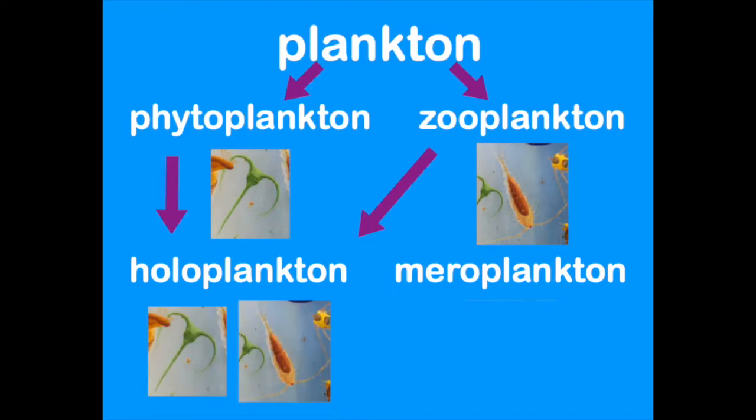Our final group of plankton is called meroplankton. They are plankton for only a part of their life cycle. They start out as drifters, but eventually they grow strong enough that they can swim against the ocean's currents. So they're plankton today, but not tomorrow.